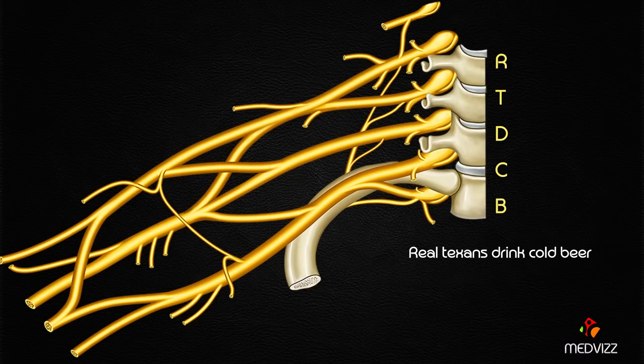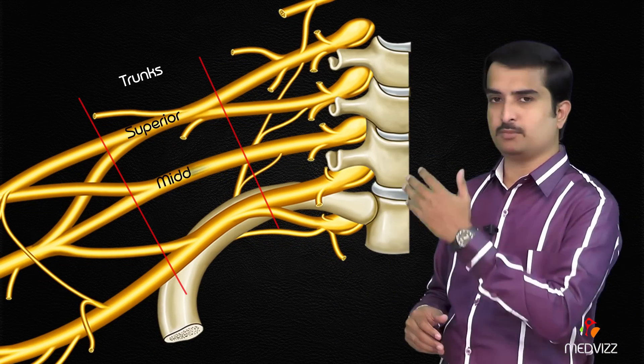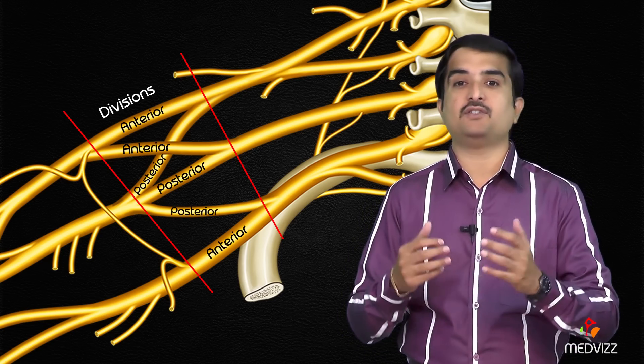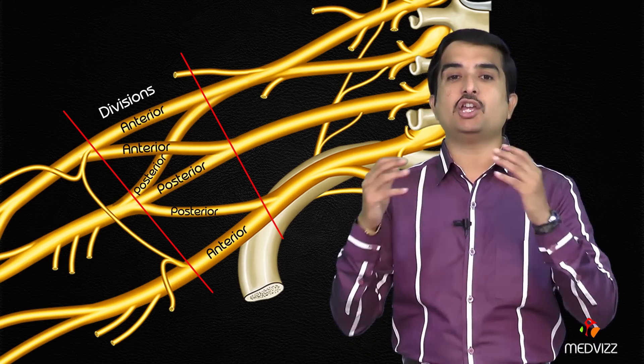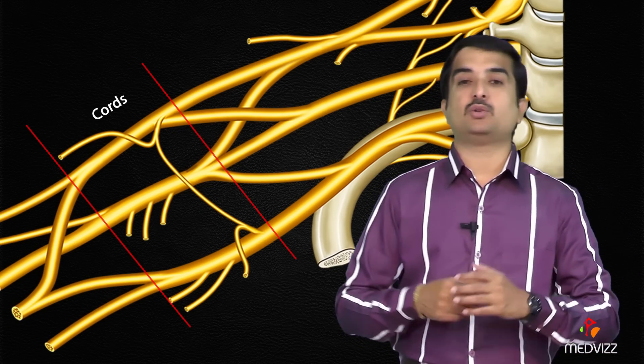Use the mnemonic 'Real Texans Drink Cold Beer' to remember the proximal to distal organization of the brachial plexus: Roots, Trunks, Divisions, Cords, and Branches. We have totally five roots arising from the ventral rami of C5, C6, C7, C8, and T1, totally three trunks — superior, middle, and lower — and totally six divisions, with an anterior and posterior division from each trunk.